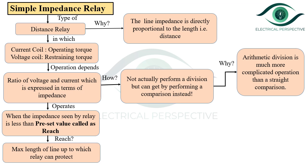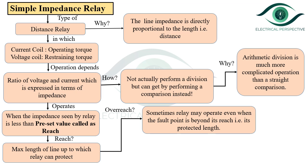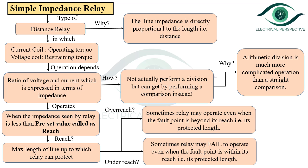What is reach? It is the maximum length of line up to which the relay can protect. There are two terminologies: overreach, meaning that sometimes the relay may operate even when the fault point is beyond its reach, that is beyond its protected length; and underreach, meaning that sometimes the relay may fail to operate even when the fault point is within its reach, that is within its protected length.